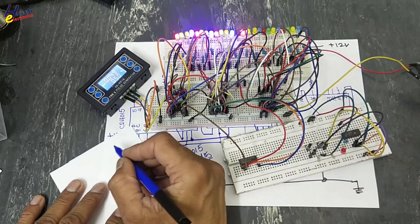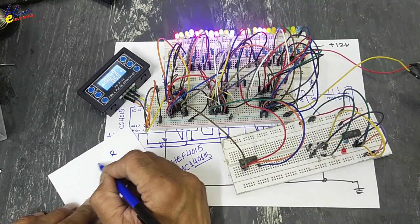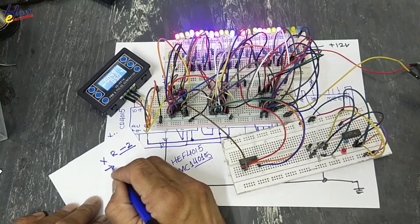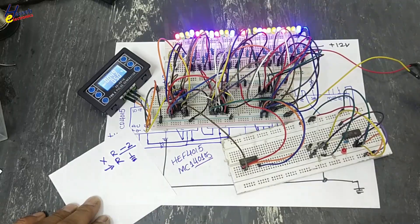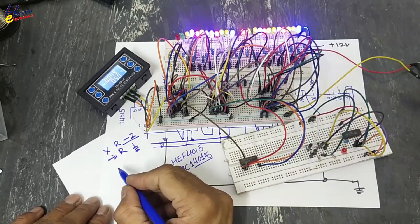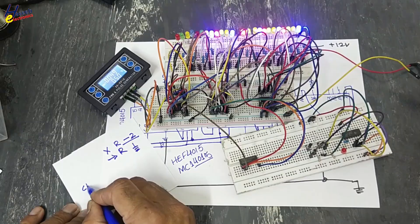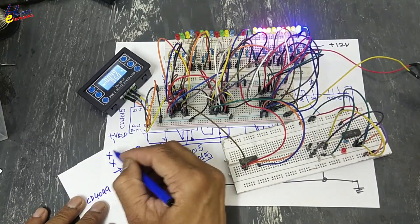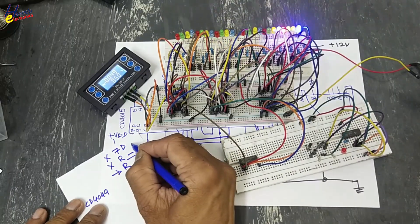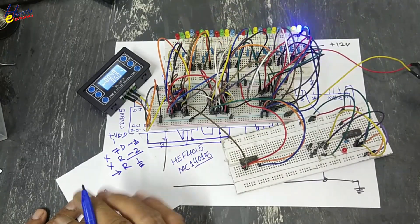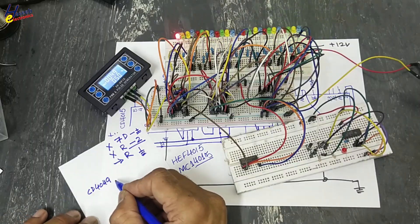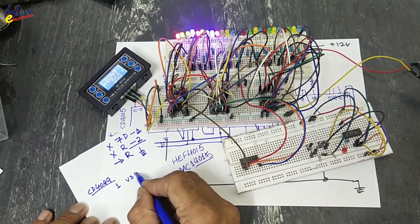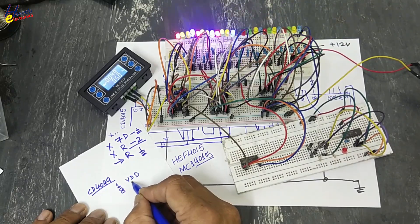We disconnected reset pin from pin number 2. And we connected reset pin to ground. Then we connected CD4049 IC. And we removed pin number 7 data input from positive voltage. We disconnected it. Now CD4049, we connected pin number 1 VDD. Pin 8 ground.